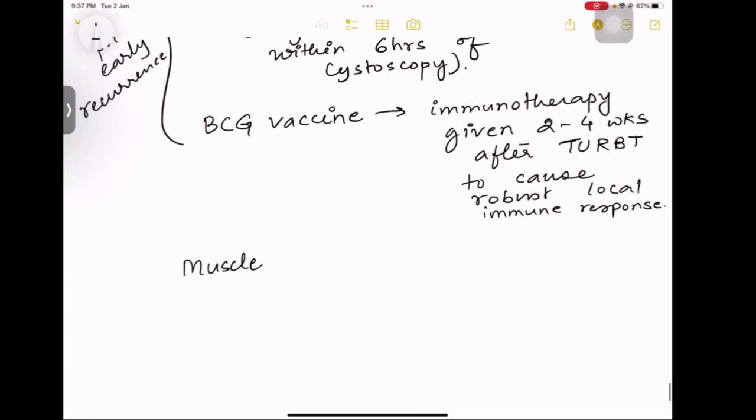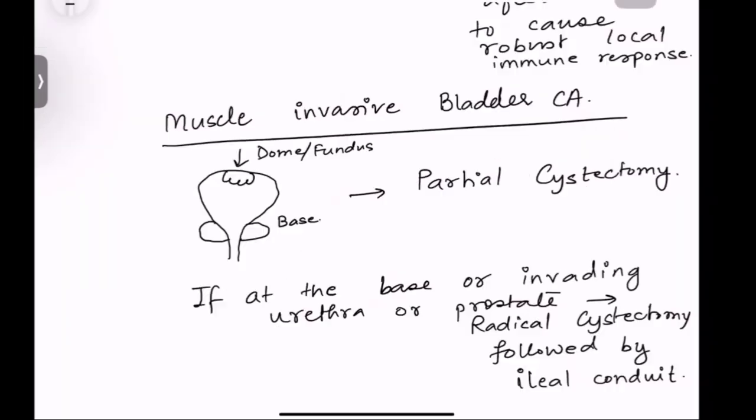If the tumor has invaded other organs, you have to remove those also. Sometimes ileal conduit also has to be done - invading structures have to be removed. One more thing: in case of non-muscle invasive bladder carcinoma, as immunotherapy, you have to give the BCG vaccine. This has to be given 2 to 4 weeks after transurethral resection of bladder tumors.